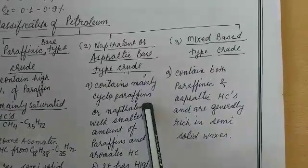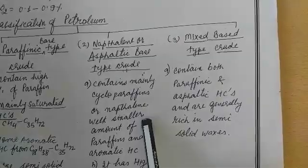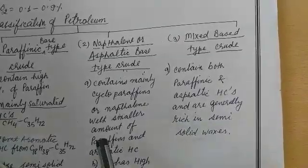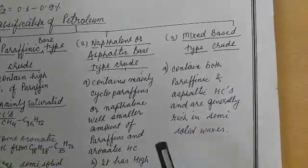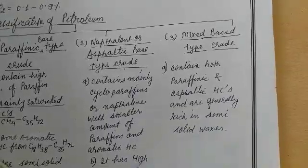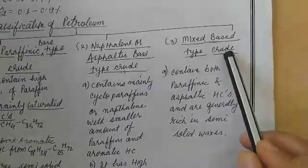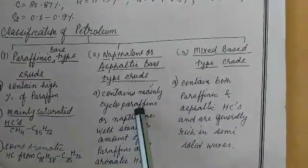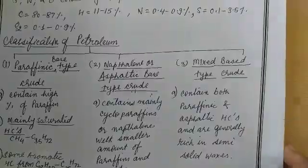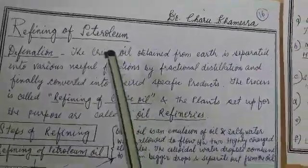The second type is naphthenic or asphaltic base crude. They contain cycloalkanes or cycloparaffins, and some amount of naphthalene-like and aromatic compounds are also present. They have a high octane number. Mixed base type crude contains a combination of both paraffinic and naphthenic base crudes.